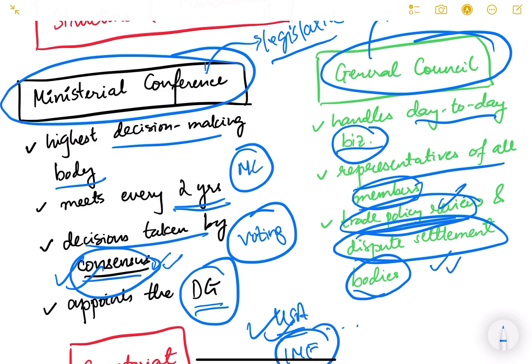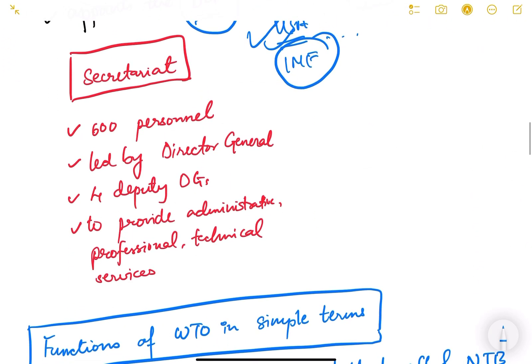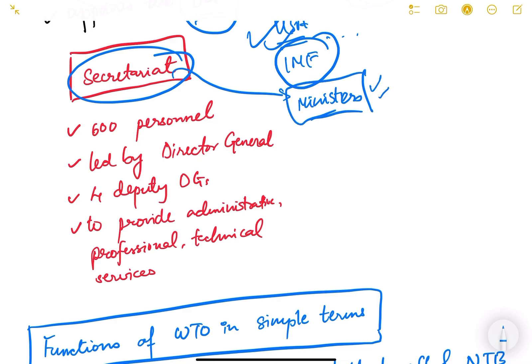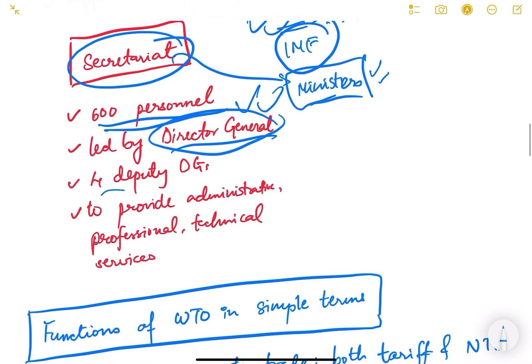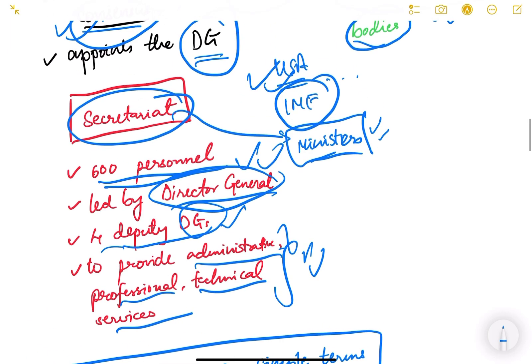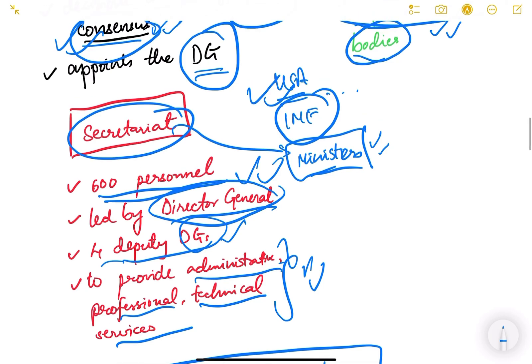Countries complain about each other — for example, America may say India has a discriminatory policy, or India may say America's policy is discriminatory against them. These disputes go to dispute settlement bodies within the General Council. The Secretariat, led by the Director General and four Deputy Director Generals, has around 600 personnel. It provides administrative, professional, and technical services to support the Ministerial Conference and General Council.